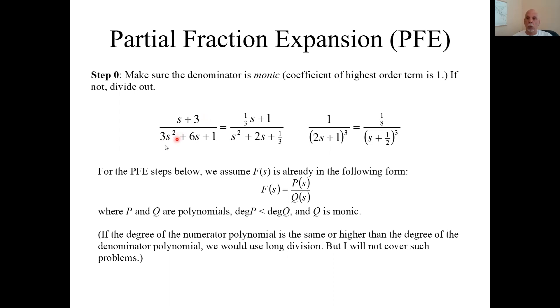That means the coefficient of the highest order term in the denominator has to be one. So this guy is not monic, this guy is monic. The other thing is we're going to need the numerator, the power of the polynomial in the numerator, to be at least one less than the power of the polynomial in the denominator. If that's not true, you would have to use long division. It doesn't come up very much in my course.